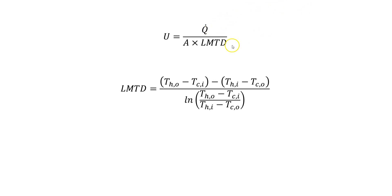The subscripts mean: H means hot, so in this case it would be the hot fluid moving through the tubes; C means cold, so that would be the fluid moving through the shell. I and O just mean in and out — so these would be the values at the inlets and at the outlets. We're going to follow this form and apply it in CFD Post using expressions, and we should be able to calculate a value of U.